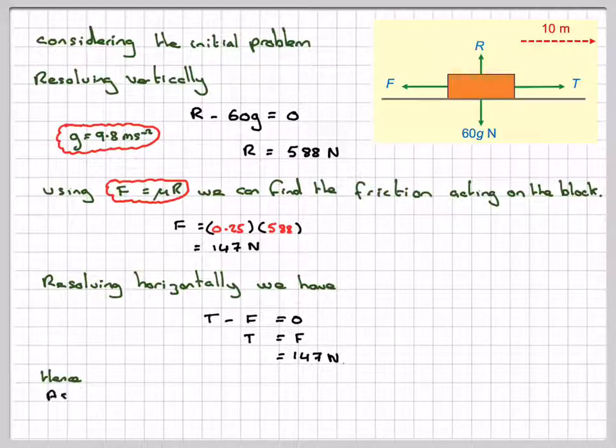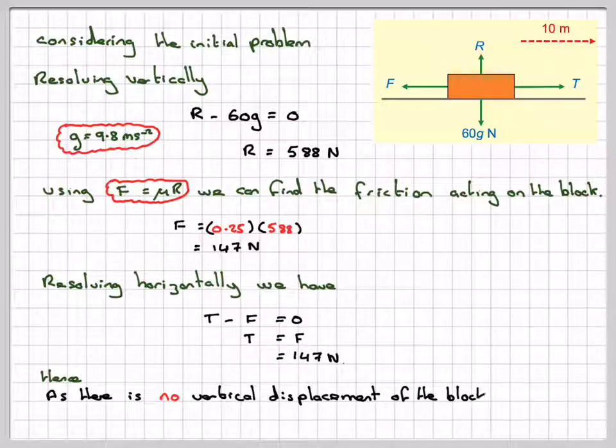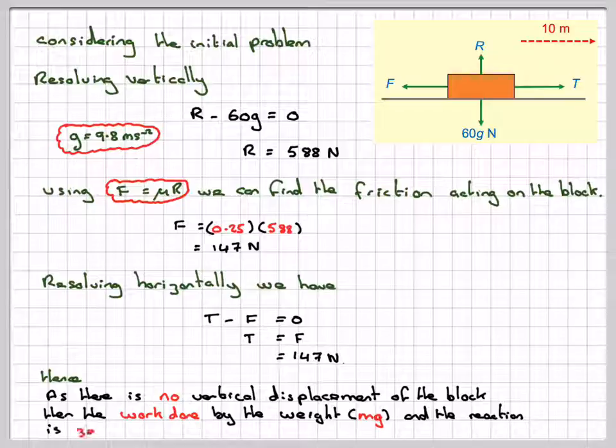Now, hence, the work done in this direction, there's no vertical displacement of the block, so the work done by the weight mg and the reaction R is equal to 0.